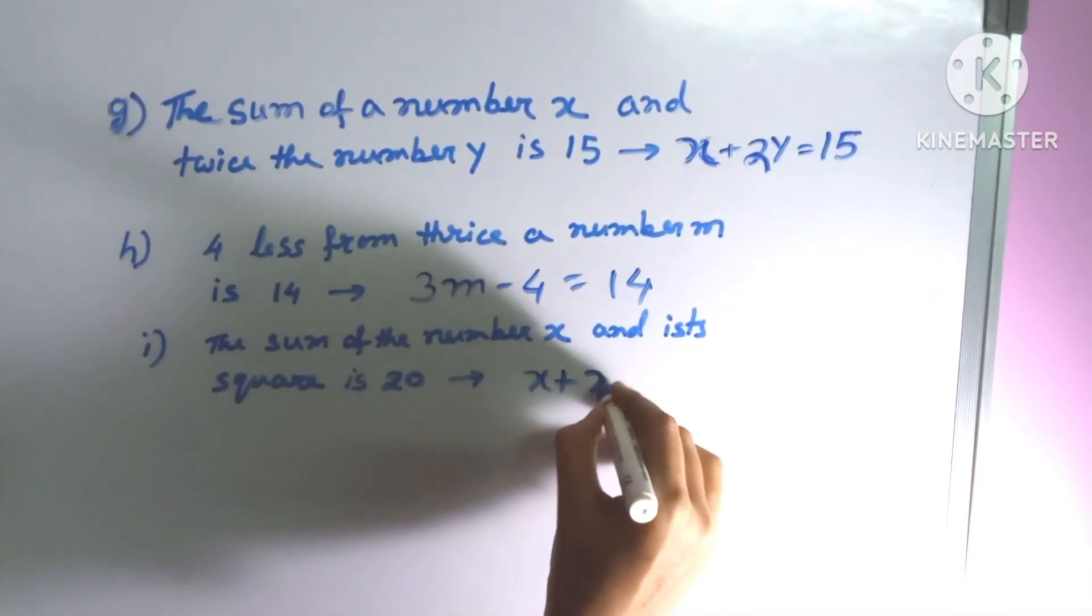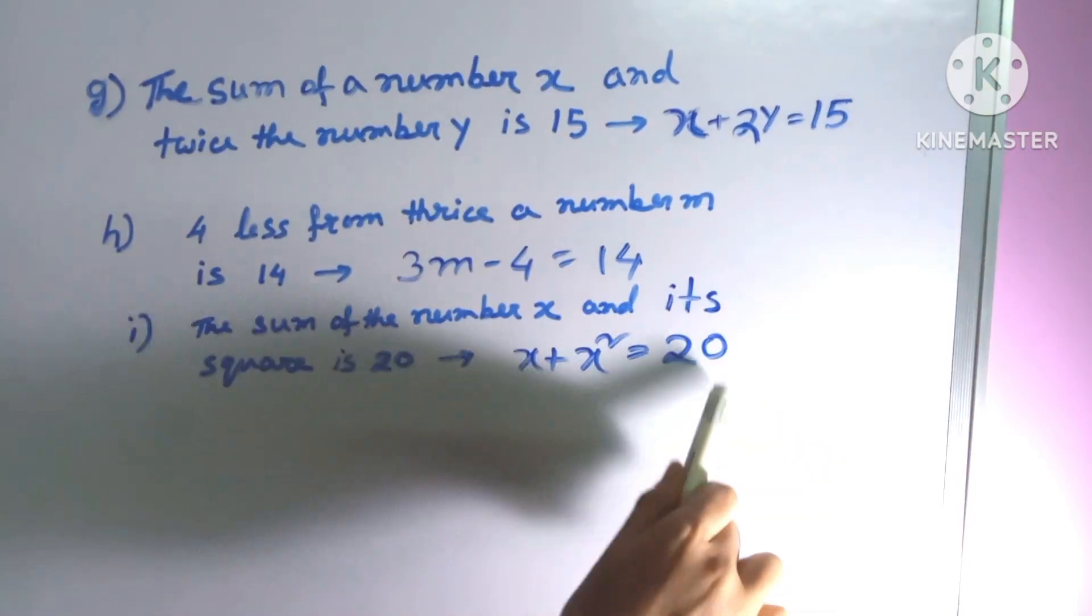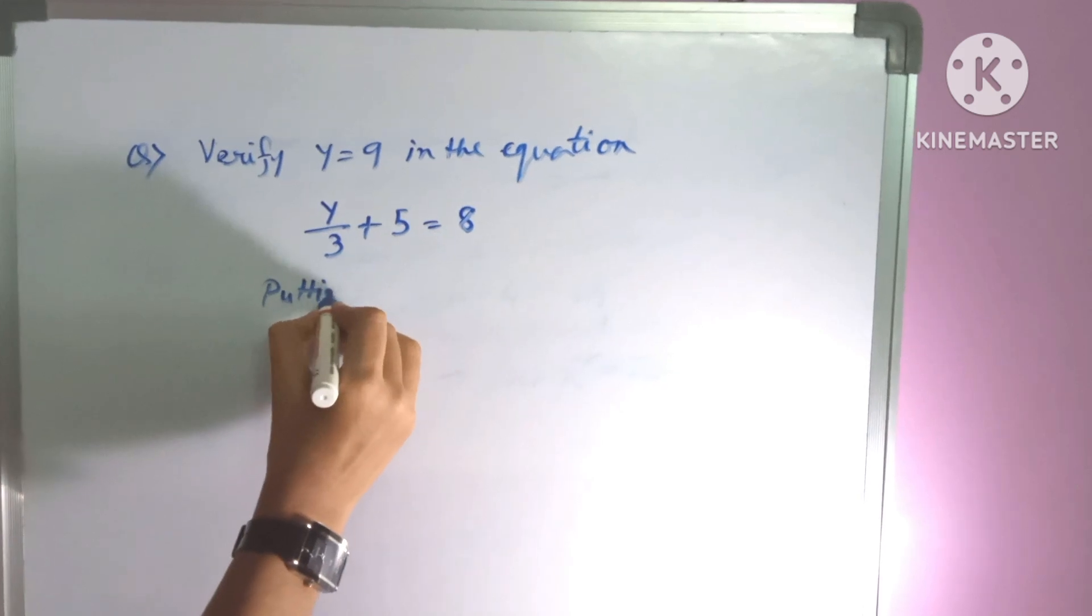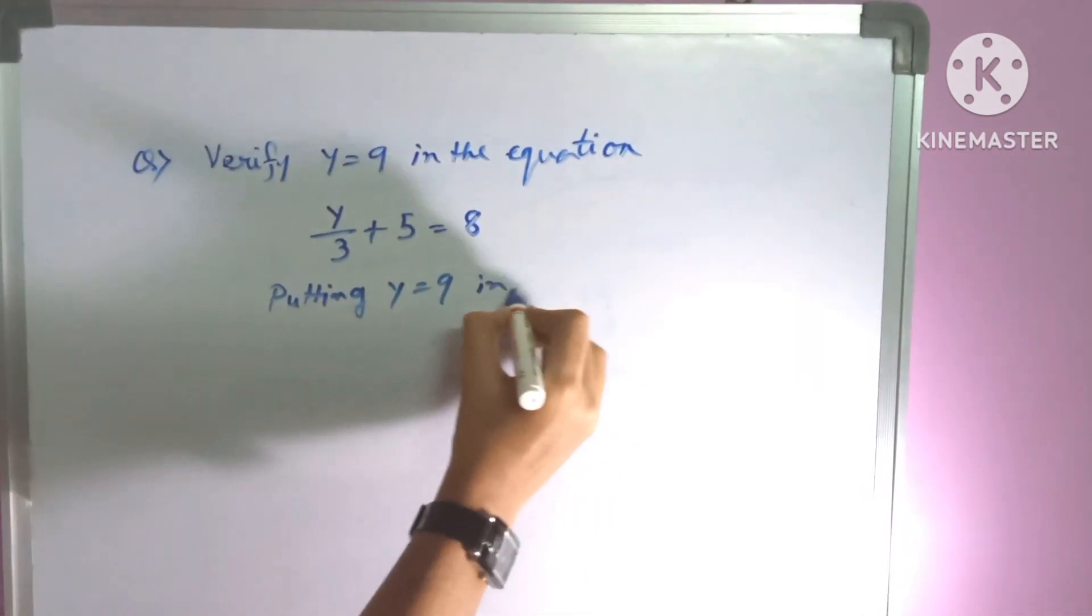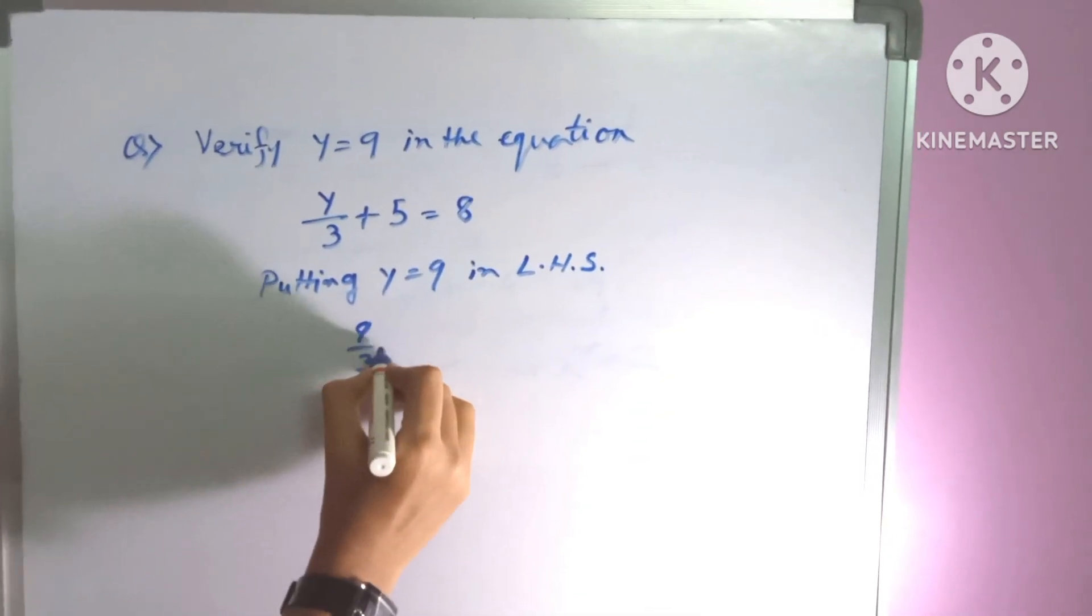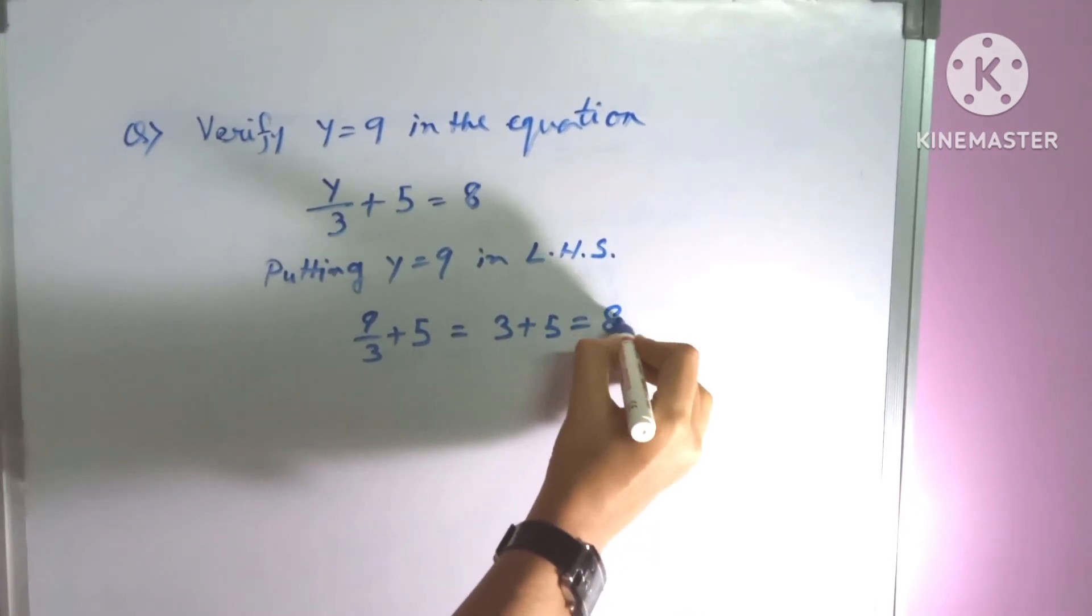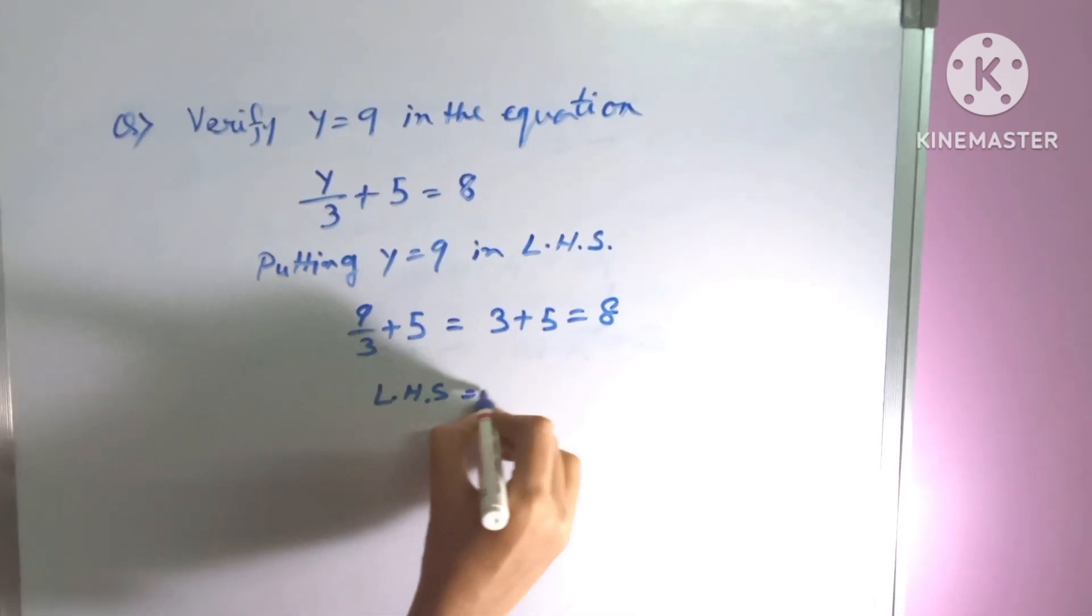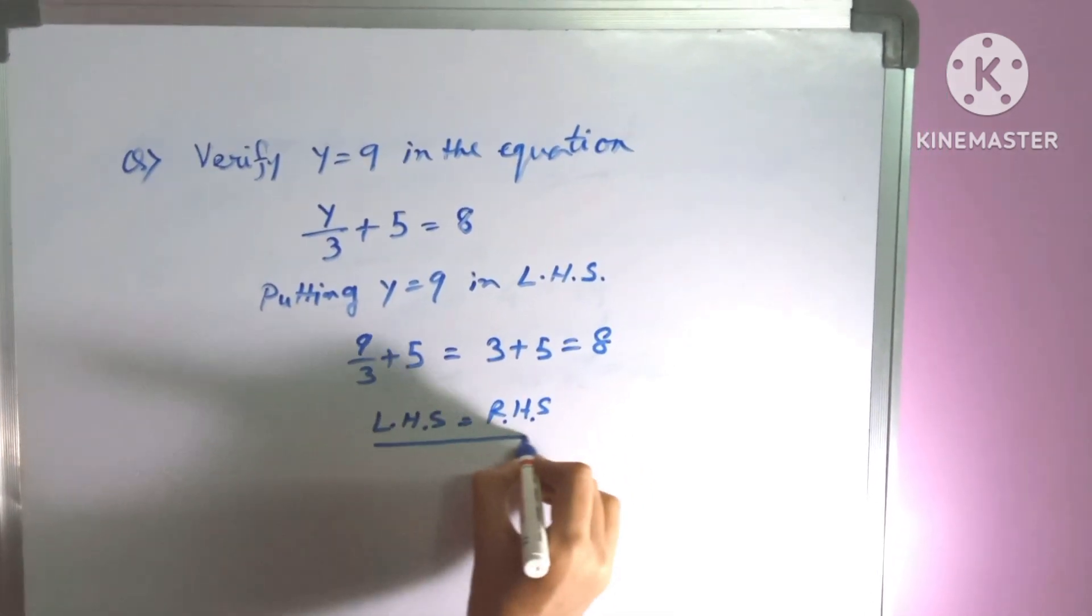This is the example of an equation and I have to prove here that left hand side equals right hand side. Now I am putting the value of Y equals 9 in the left hand side of this equation. Now you can see after putting the value of Y equals 9, the left hand side value became same as right hand side, that is 8.